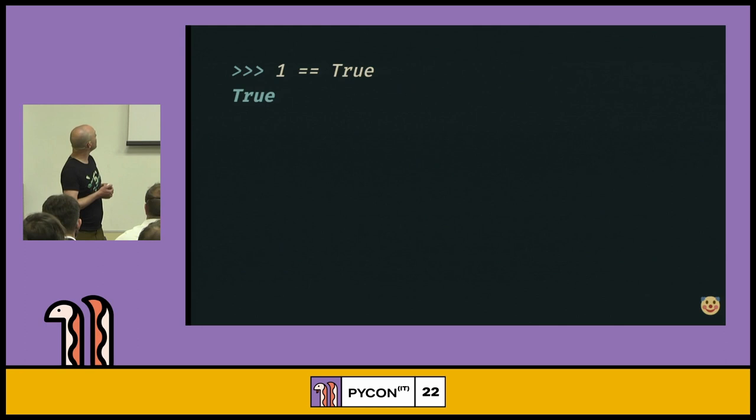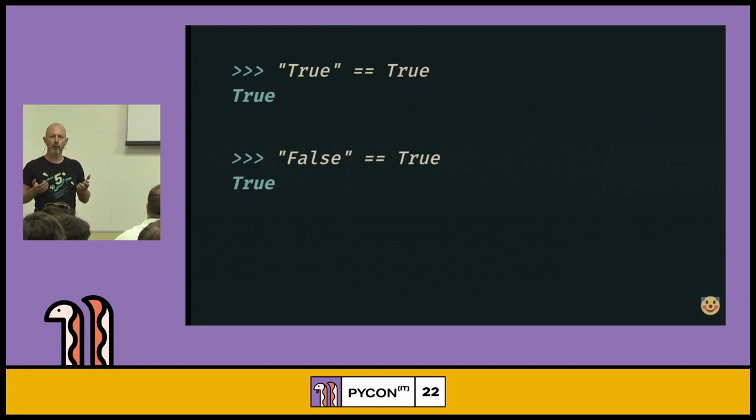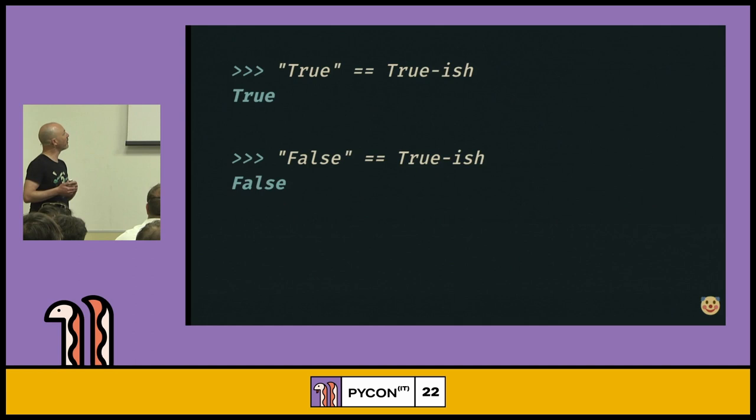For historical reasons, one is also equal to true, and zero is equal to false, or zero is not equal to true. This is where it starts to get interesting. If I compare a string containing the word true to the value true, that evaluates as true, which is great. This is exactly what we want. The only problem is that the string containing the word false also evaluates to true. And this is because only empty strings evaluate to the same as false. And an empty string that you put the word false into is no longer empty, and therefore, it is considered to be true. So that's not really what we want. I want something that's not exactly true, but true-ish. And this is what I'm going to show you how to build.